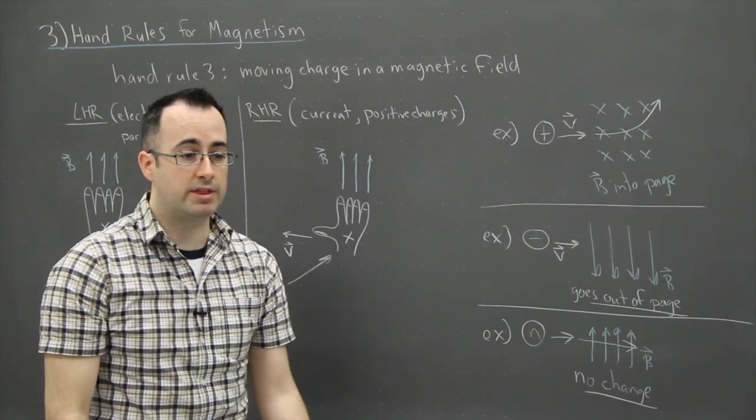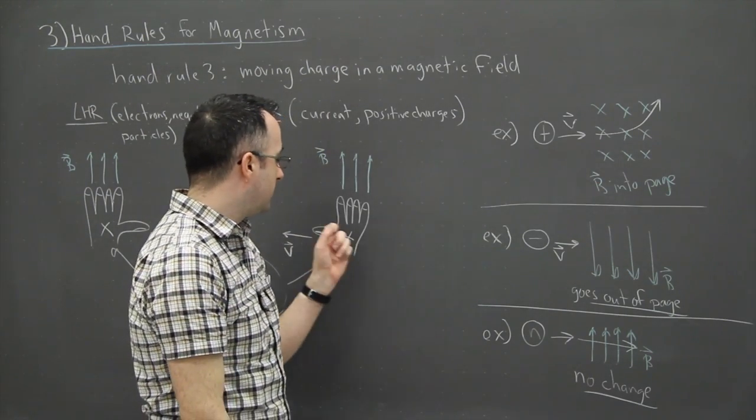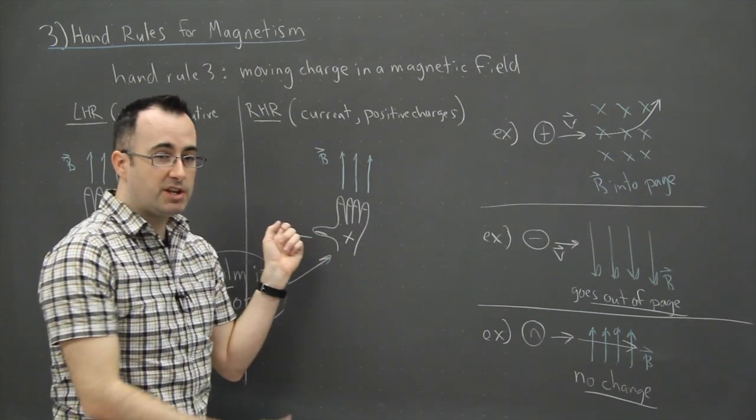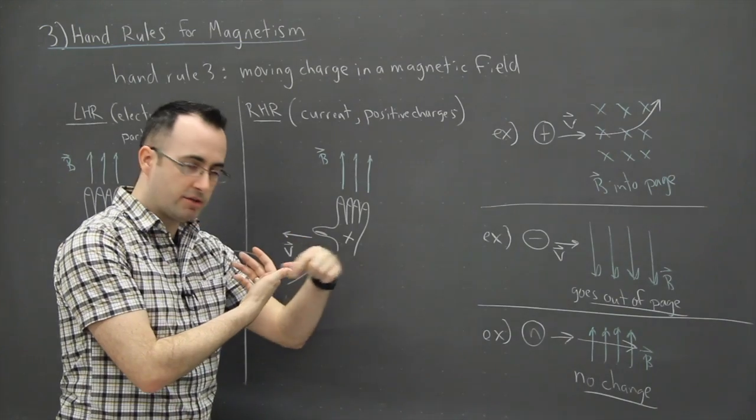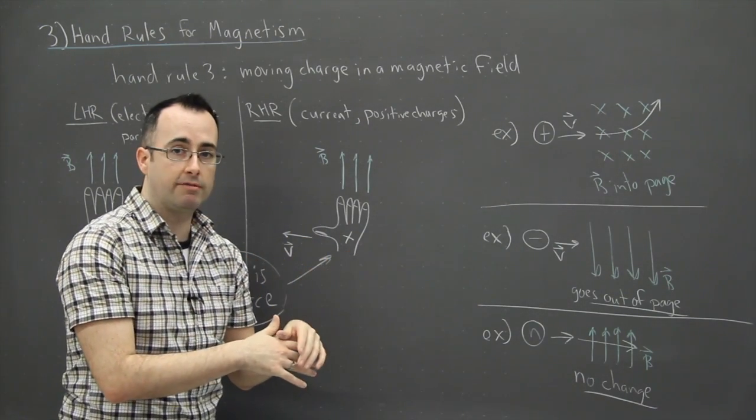We could use this as well with a wire. And if we had a wire, we would just say that the velocity in a wire would just be the direction of the current. In other words, the direction of the charges. So that's the only other part you would have to do.